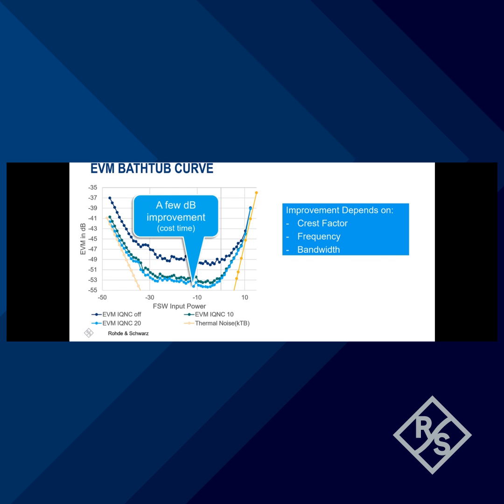This IQ noise cancellation works really well for lower power level signals. Previously I used a minus 30 dBm signal. More number of averaging gives a few dB better EVM, but a little bit longer measurement time.